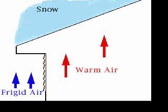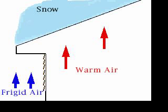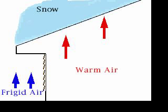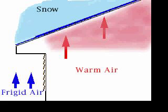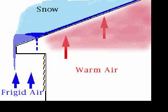As heat escapes through your insulation, the attic space becomes warmer than the outside air. This causes the bottom layer of the snow on your roof to melt. When the water reaches the frigid air of the overhang, it freezes and creates an ice dam. The continuous flow of water causes the ice dam to grow and the puddle of water behind it to back up under the shingles.